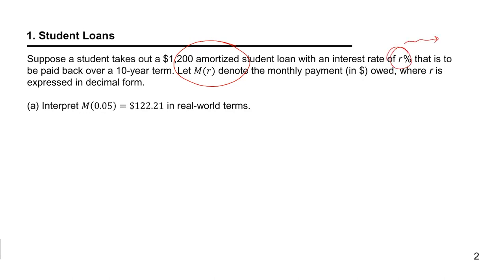Suppose a student takes out an amortized loan with an interest rate of R percent — expressed in decimal form, maybe 0.04 or 4% — and a 10-year term. We'll say M of R is the monthly payment, where R is the interest rate in decimal form.